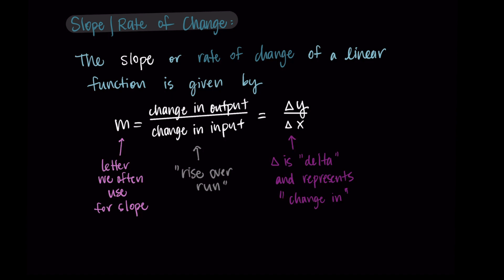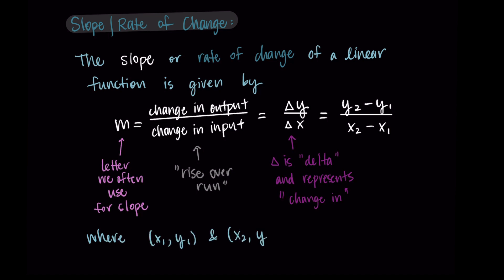We can expand this further by writing this as y2 minus y1 divided by x2 minus x1. This indicates that in order to find the change in y and the change in x, we choose two points on our line and use those as our x and y values to find the slope. The change in y is the difference in the y values, and the change in x is the difference in the x values. x1, y1 and x2, y2 are any two points on the line — you can choose any two points because the rate of change will always be the same between any two points. That's what distinguishes a linear function.